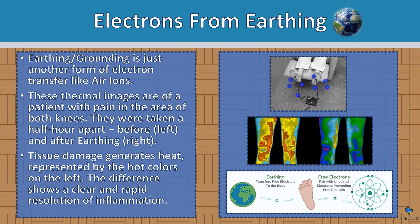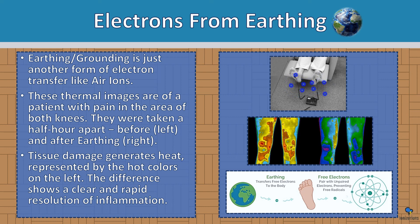Electrons from earthing: earthing, or grounding, is just another form of electron transfer, like air ions. These thermal images are of a patient with pain in the area of both knees, taken a half hour apart before and after earthing. Tissue damage generates heat, represented by the hot colors — the difference shows a clear and rapid resolution of inflammation. Inhaling or absorbing electrons heals the body, and earthing is very similar to air ionization.